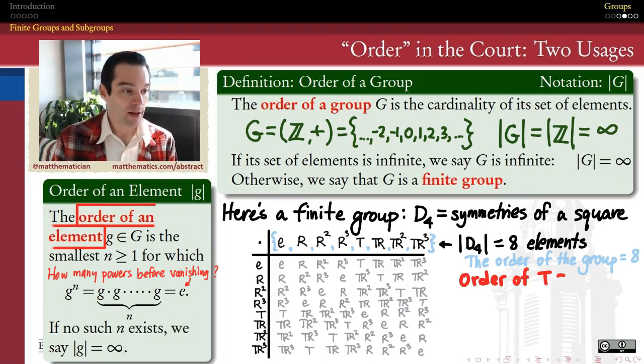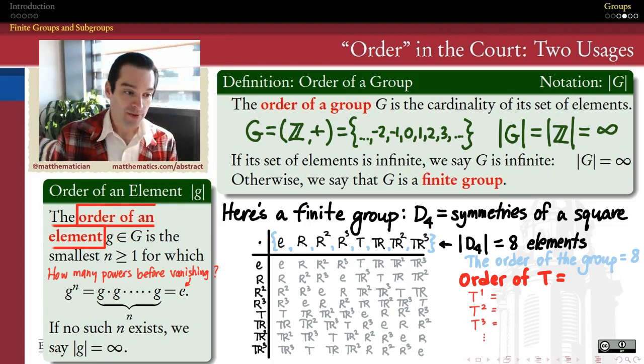So let's single out an element in our group of symmetries of the square. Let's say t. I want to know what is the order of the element t? To answer this question, let's just start taking some powers of t. I'm going to do this with my handy-dandy dihedral group manipulator app, just for fun, to show it off again. And then we'll come back and figure out what that means for our algebra.